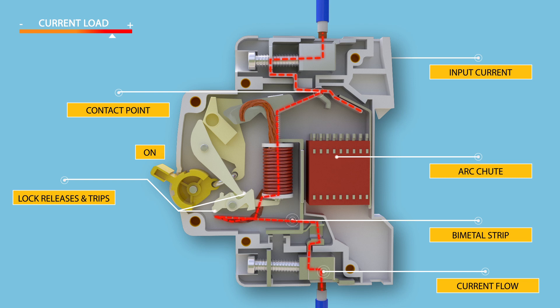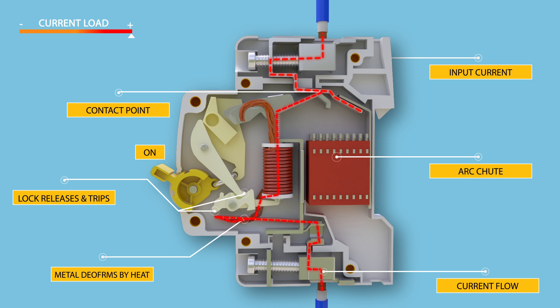Inside the arc chute, the arc is divided into a series of smaller arcs. At the same time, energy is extracted and the arc cools down.